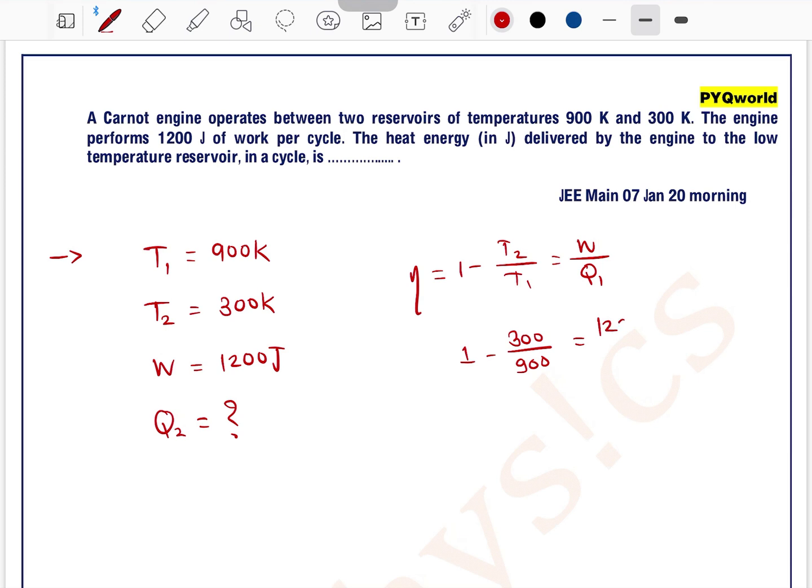1 minus T2 is 300 by 900 is equal to W, W is 1200 by Q1.